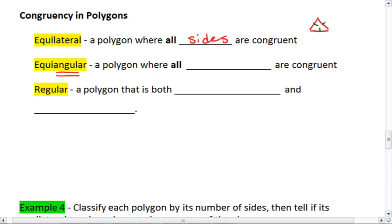Equiangular, notice our angular, is a polygon where all angles are congruent. So if I have a polygon and all angles are marked congruent, it's equiangular.